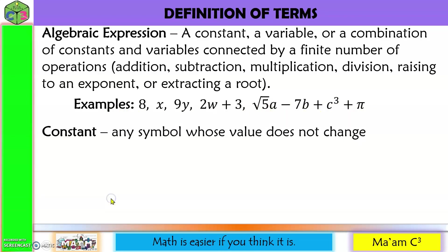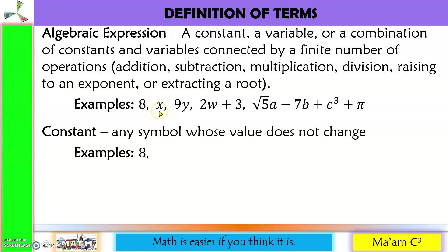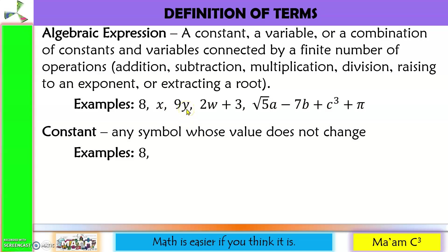Next, constant. Any symbol whose value does not change — it means it has a fixed value. So in here, 8 is a constant. x is not. 9 here is technically a constant, but since it is combined with a variable, these two work as one. And when this variable takes on different values such as 2, this will become 9 times 2 which is equal to 18. So we do not consider here 9 as a constant.